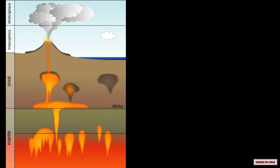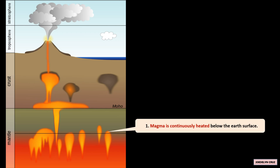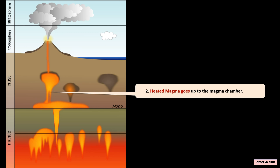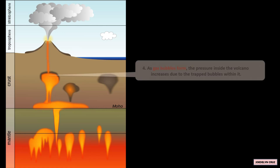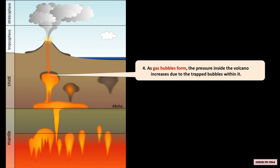Let us sum up. These are what happen during volcanic eruptions. Magma is continuously heated below the Earth's surface. Heated magma goes up to the magma chamber. As magma rises, it encounters resistance from the surrounding rock, leading to build-up of pressure within the volcano. As gas bubbles form, the pressure inside the volcano increases due to the trapped bubbles within it.